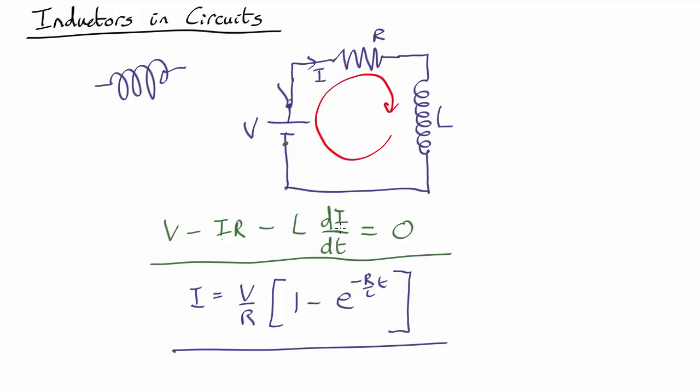So it's increasing as fast as it can. But as the current ramps up and up, you have more and more voltage drop across here, which means there's less and less voltage drop to force a current through there. So the rate of increase slows down until eventually it plateaus out.